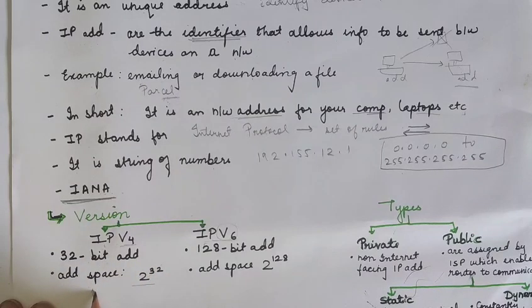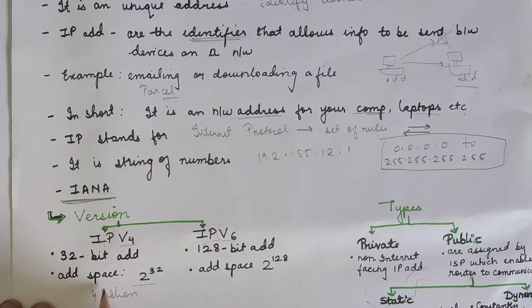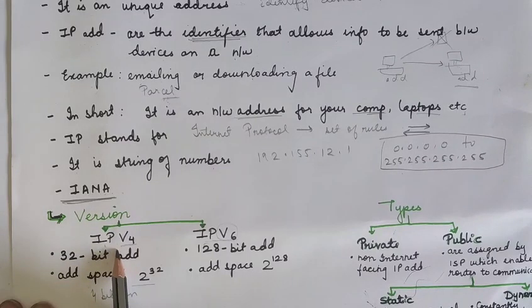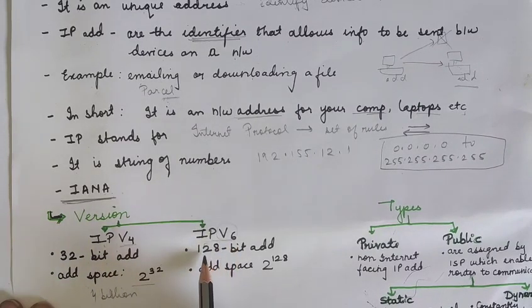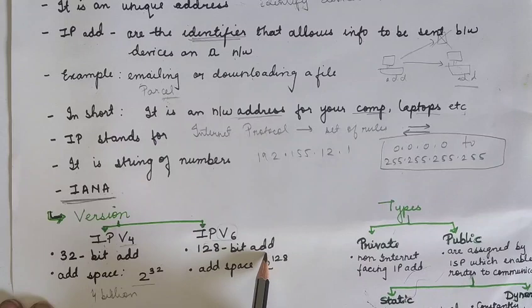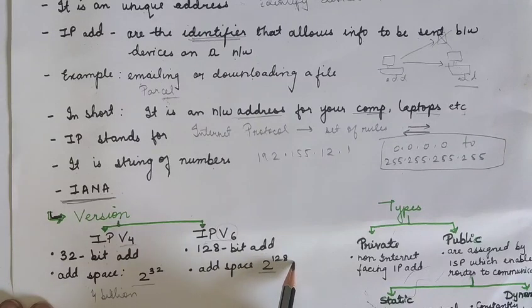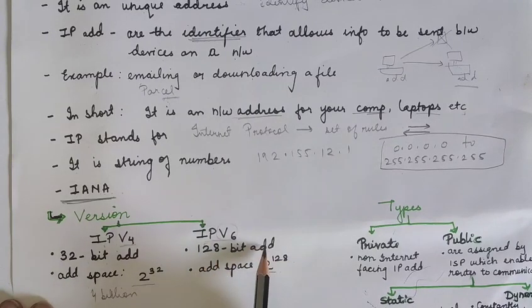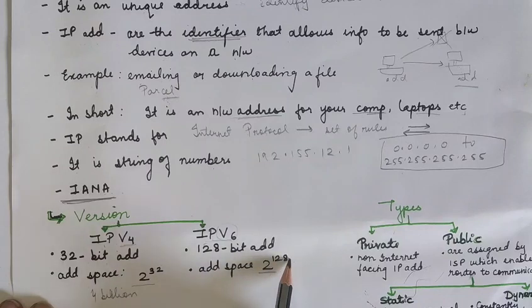You can say that almost 4 billion addresses can be used in the IPv4 whereas in the IPv6 it has 128-bit address. And you can say that address space for this is 2 raised to 128. 128-bit address it has and address space is 2 raised to 128.